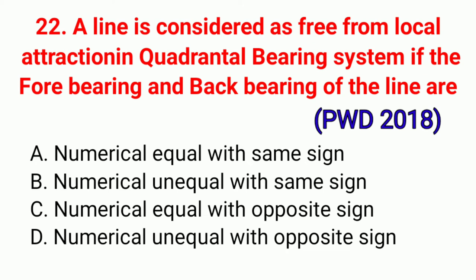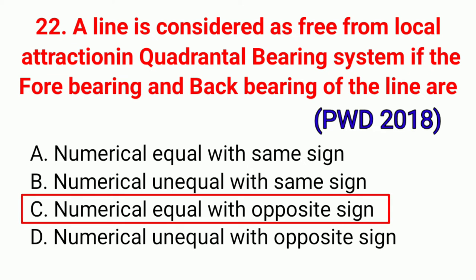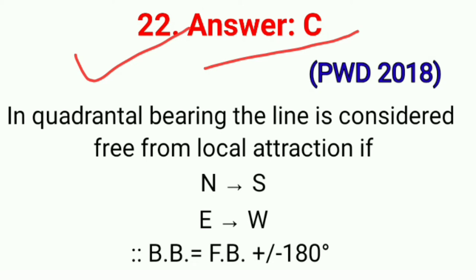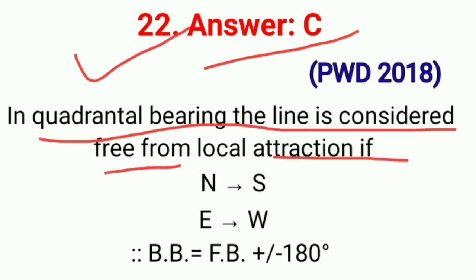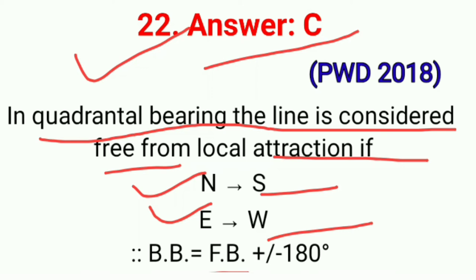Question No. 22. A line is considered as free from local attraction in quadrantal bearing system if the fore bearing and back bearing of the line are — correct option C: numerically equal with opposite sign. In quadrantal bearing, the line is considered free from local attraction if north versus south and east versus west; BB = FB ± 180°. Correct option C.